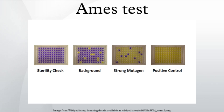The Ames test is a widely employed method that uses bacteria to test whether a given chemical can cause mutations in the DNA of the test organism. More formally, it is a biological assay to assess the mutagenic potential of chemical compounds. A positive test indicates that the chemical is mutagenic and therefore may act as a carcinogen, because cancer is often linked to mutation.